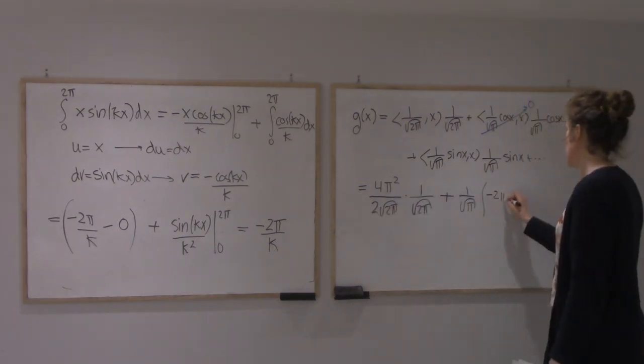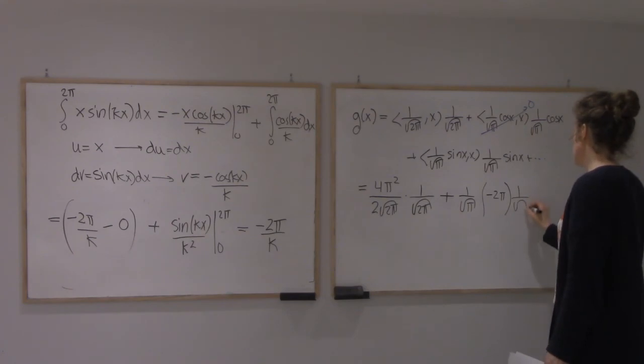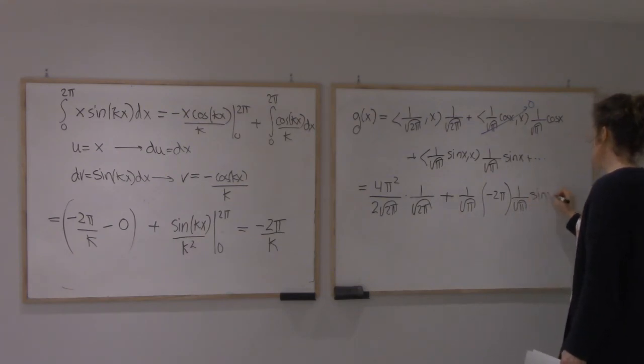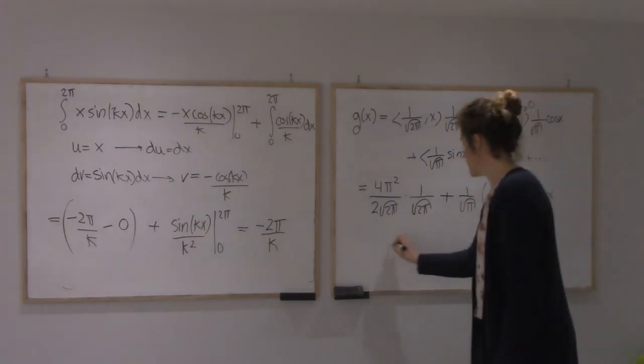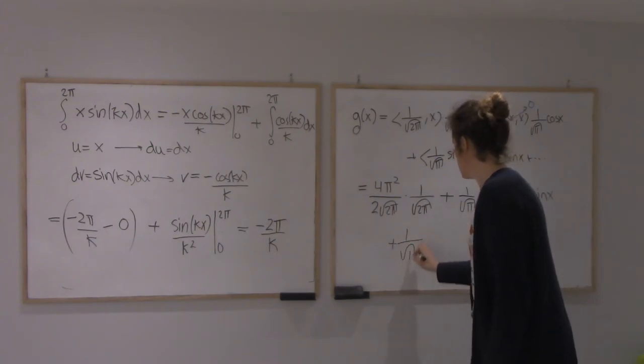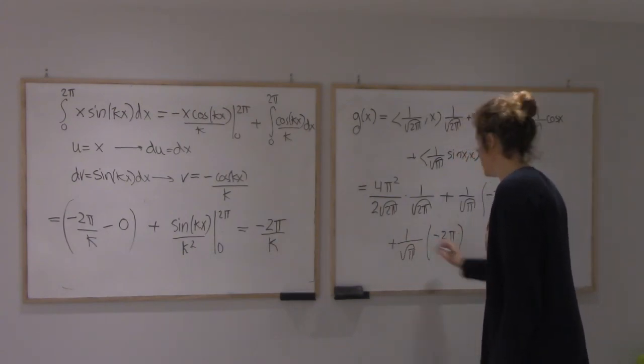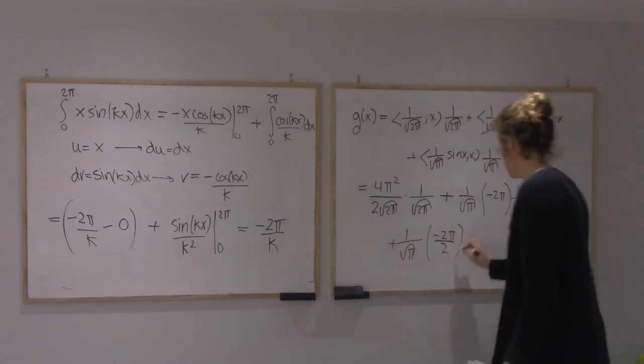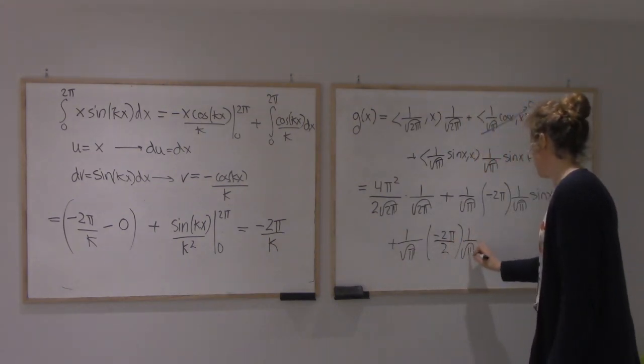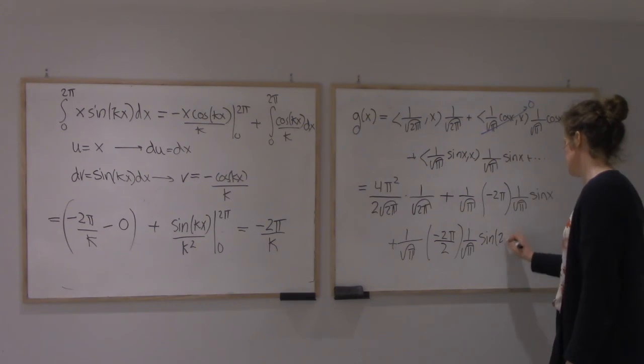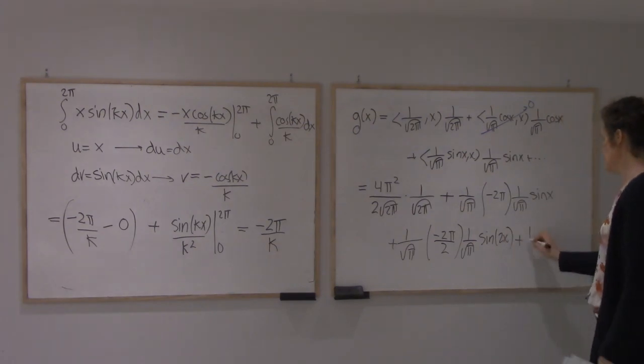If k is equal to 1, I get minus 2π times 1 over root π sin of x. The next one is the same thing, but my k is 2, so I'm going to get a divided by 2. And then the final one has k equals 3, so I will get a divided by 3.